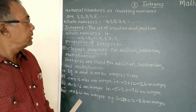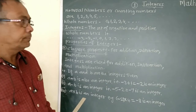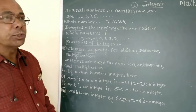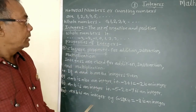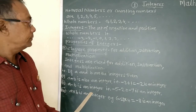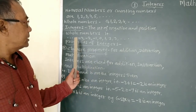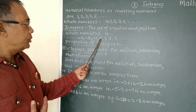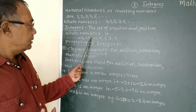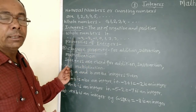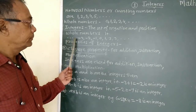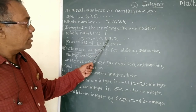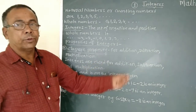Now we will see the set of integers. The set of negative and positive whole numbers is called integers. At the left side of 0, there are minus 1, minus 2, minus 3, minus 4, etc. And to the right side of 0, there are 1, 2, 3, 4, 5, etc.